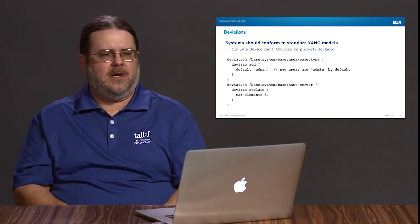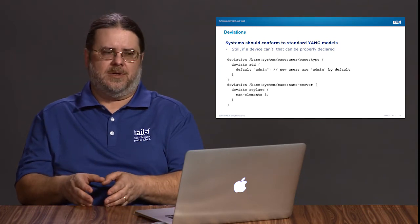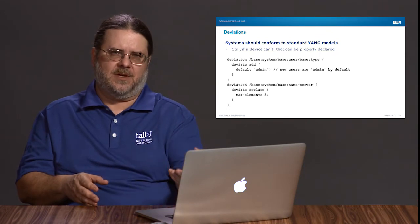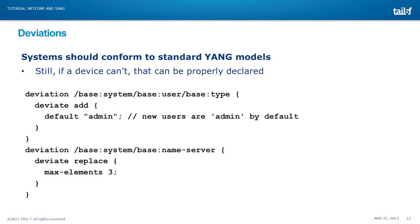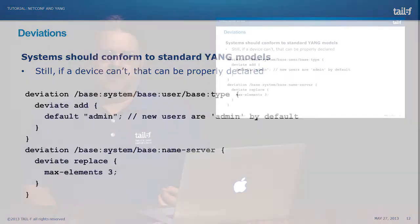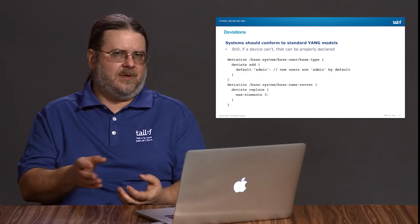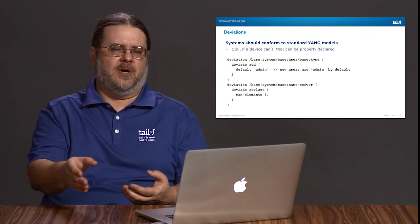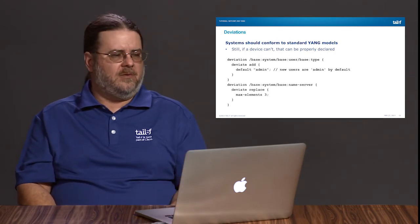Deviations. Yang has the ability for you to declare how your system deviates from a standard data model. So if you've taken the IETF standard interface model but your system somehow deviates from that model, you can use the deviation and deviate statements in Yang. Going back to our user table example, if we went back and saw the type of the user default value was something other than admin and we really want it to be admin instead, in some ways this is similar to the refined statement that you can use on Yang groupings, but this is a deviation off another model. You're not pulling in the grouping — you're simply saying how you're going to deviate from that standard model.